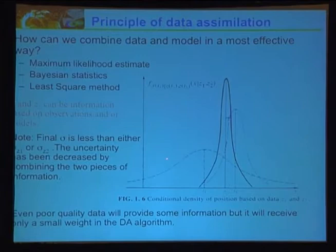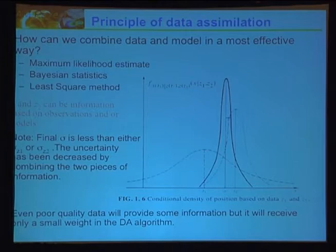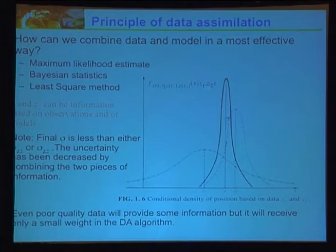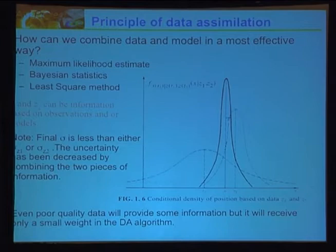A nice schematic: we want to estimate an improved state x given information from model and observations. One of the main assumptions behind most methods is that observation and model errors are Gaussian, so you can describe them with two moments — the mean and the variance or covariance — which simplifies the problem considerably. Using conditional probability and Bayes' theorem, we can get an improved state.